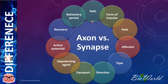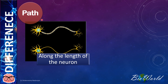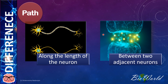So based on this list and the knowledge you have acquired from the three previous videos, you could come up with the differences and then compare with my answers in this video. So let's start with the first difference, that is based on the path taken. The transmission in the neuron is along the length of the axon, whereas for the synapse, the transmission of impulse is across the synapse, that is between two adjacent neurons.